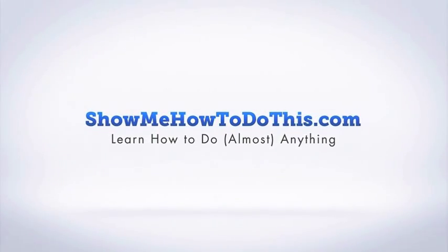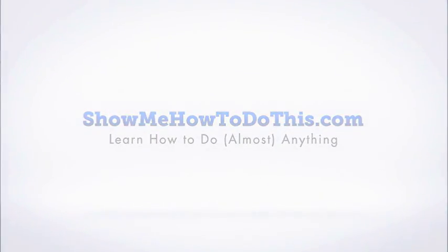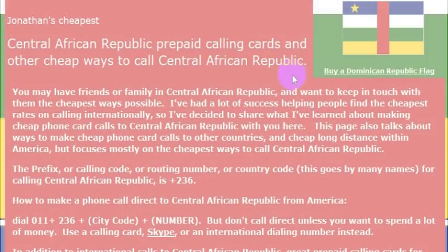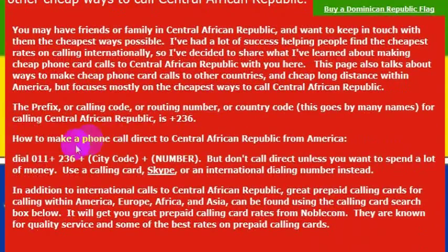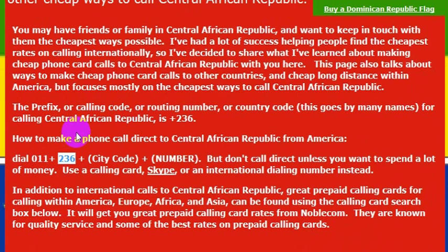Calling the Central African Republic is very simple. If you want to dial directly, you just use the international dial code which is 011, and then you just have to know the country code for the Central African Republic which is 236. So you would dial directly 011 and then 236.